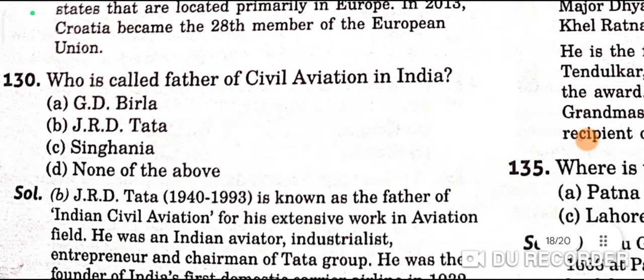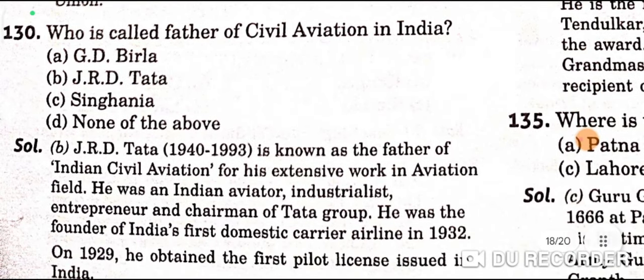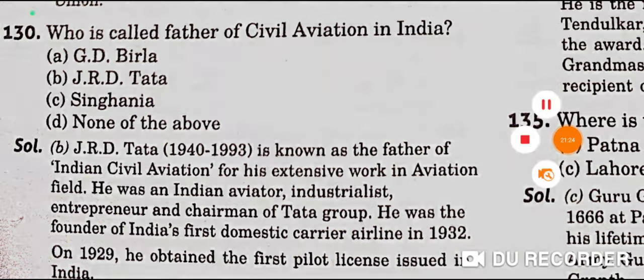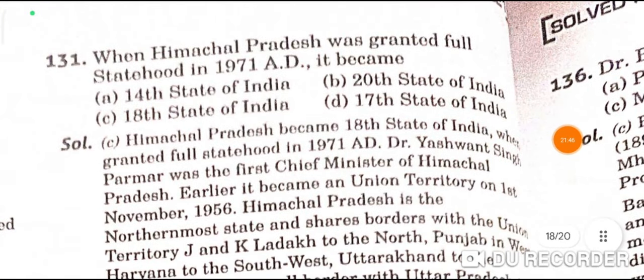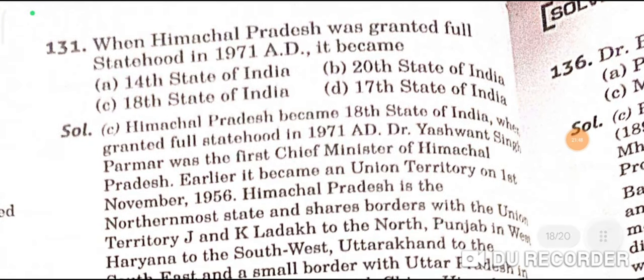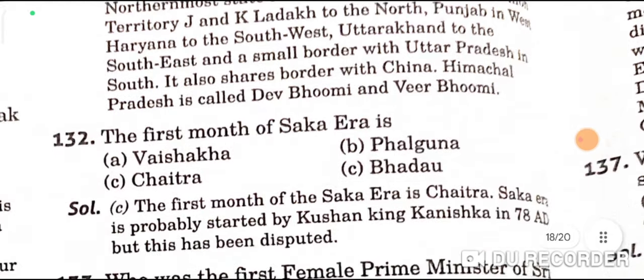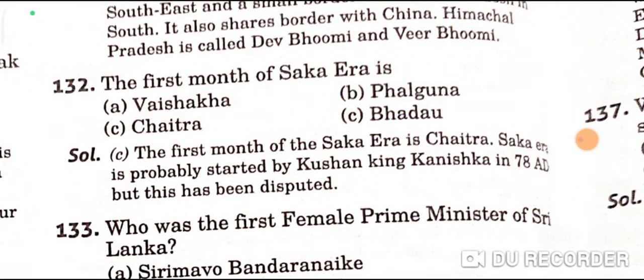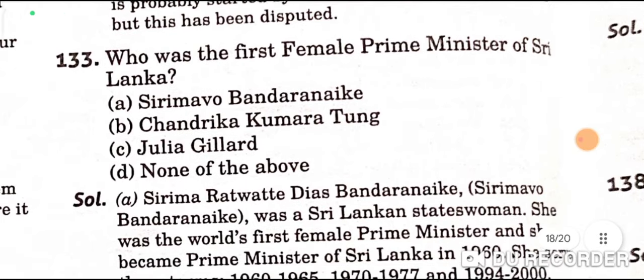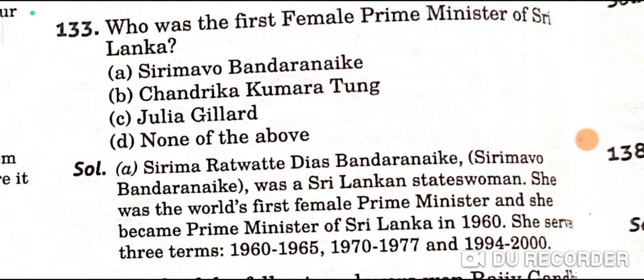The head office of the European Union is in Belgium — C is the correct option. The father of civil aviation in India is J.R.D. Tata — B is the correct option. Himachal Pradesh was granted full statehood in 1971 and became the 18th state of India — C is the correct option. The first month of the Shaka era is Chaitra — C is the correct option. The first female Prime Minister of Sri Lanka was Bandaranaike — A is the correct option.